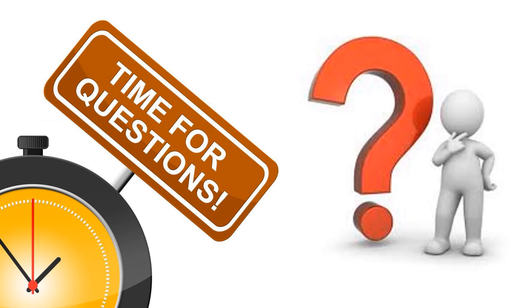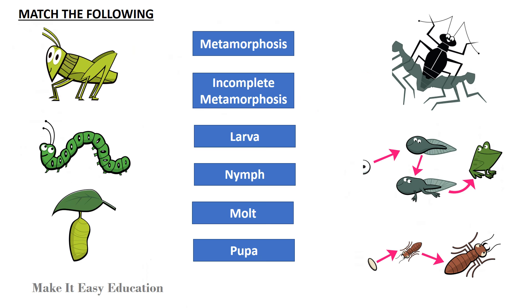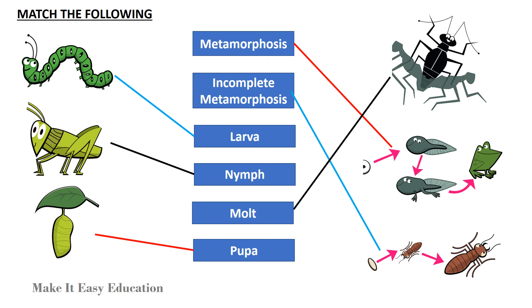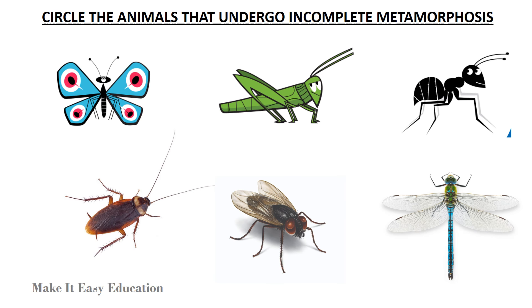Question time. Match the following. Circle the animals that undergo incomplete metamorphosis.